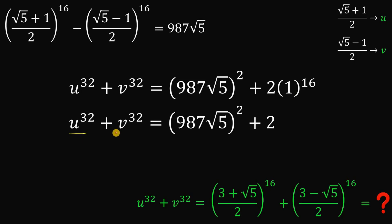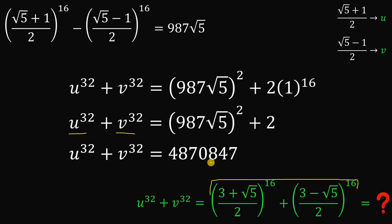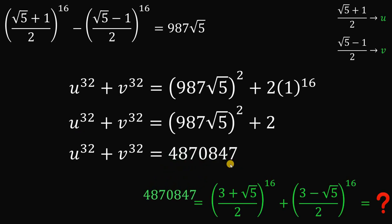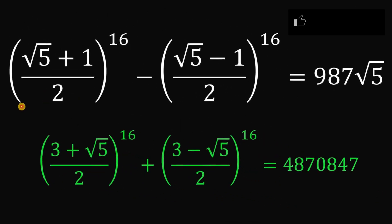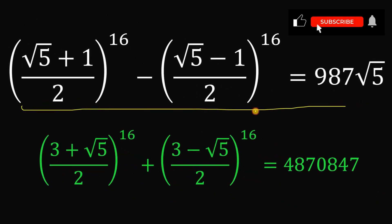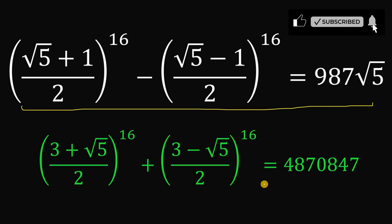Therefore, u³² + v³² = (987√5)² + 2, which evaluates to 4,870,847. That is our answer. Given the original equation, the value of the target expression is 4,870,847. And we are done.